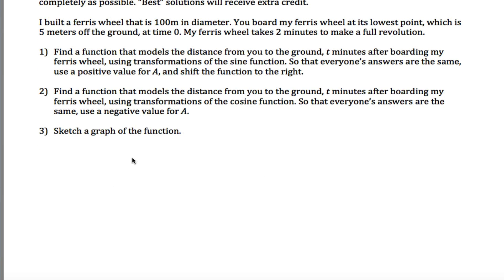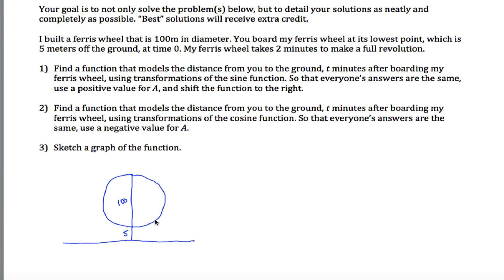But the basic idea is you have this Ferris wheel here. It's 100 meters in diameter, so this distance right here is 100, but it doesn't rest against the ground. There's an extra 5 feet here so that you're not scraping up against the ground when you're riding on this thing. And what I'm trying to do is come up with a function that models the height of a rider, so as you go around, your height would be this distance here, 2 minutes after they get on the ride.